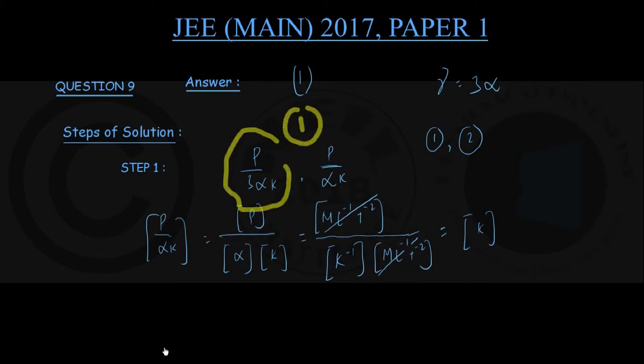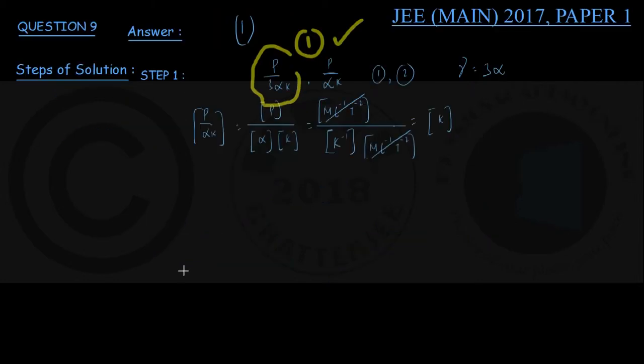Option number 1 is the correct option. This way you can get to the solution very quickly without any elaborate calculation. That was a shortcut dimensional method to get to the solution quickly. I suggest that in exams like this where time is very valuable, don't waste any more time—move on to the next question.